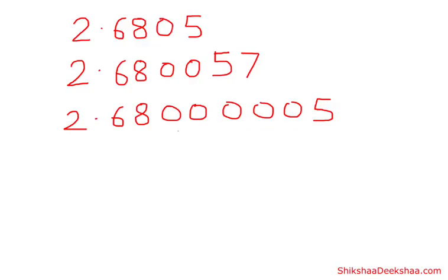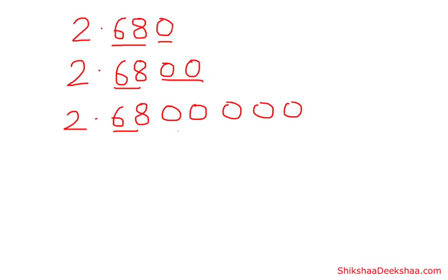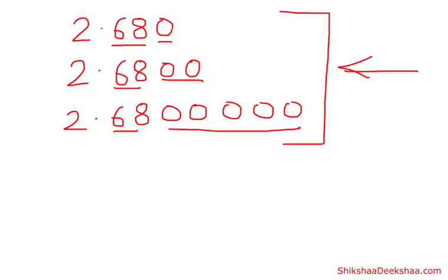But if I erase these last digits, now after 68 they all have simply zeros as their last digits. Now I can call them equivalent — all three decimal numbers are equivalent to 2.68.